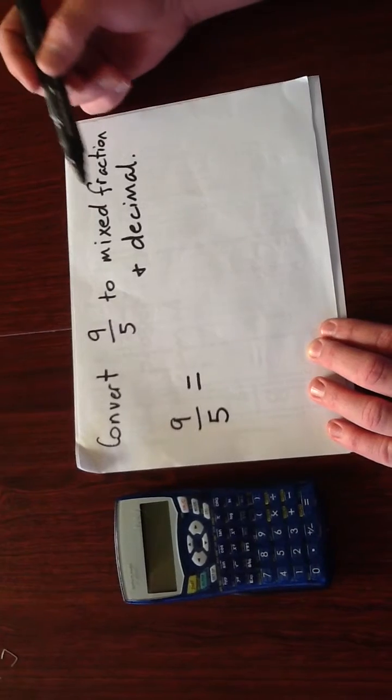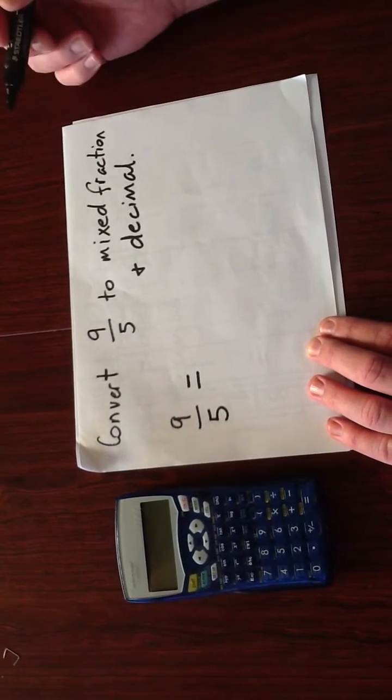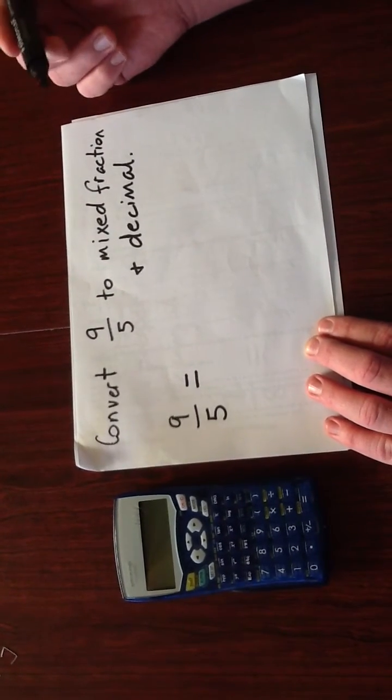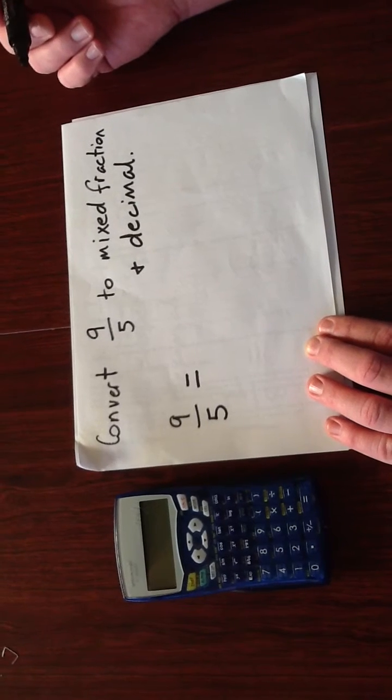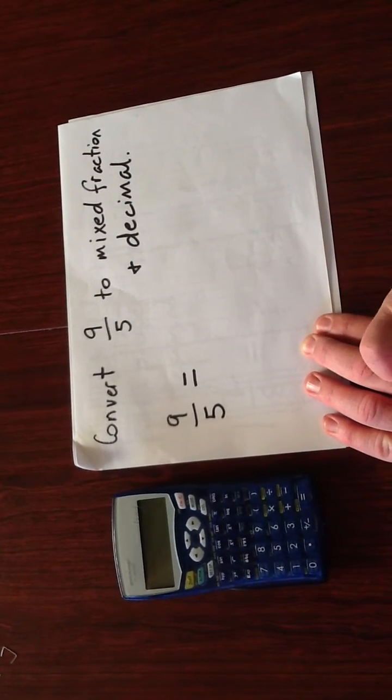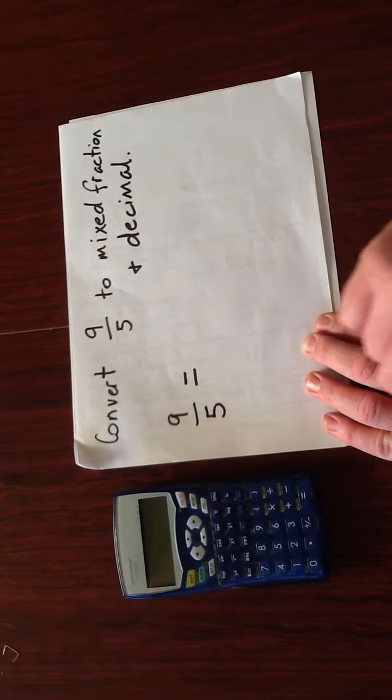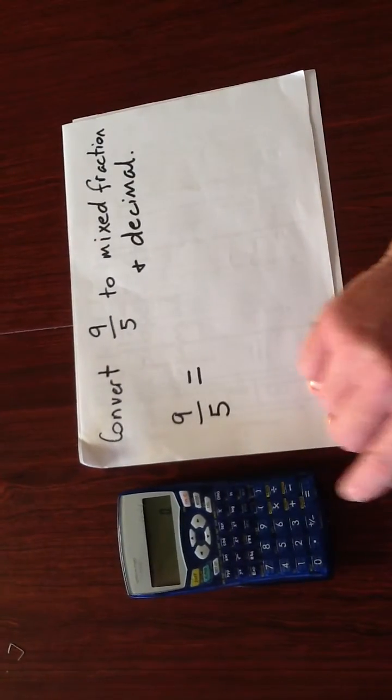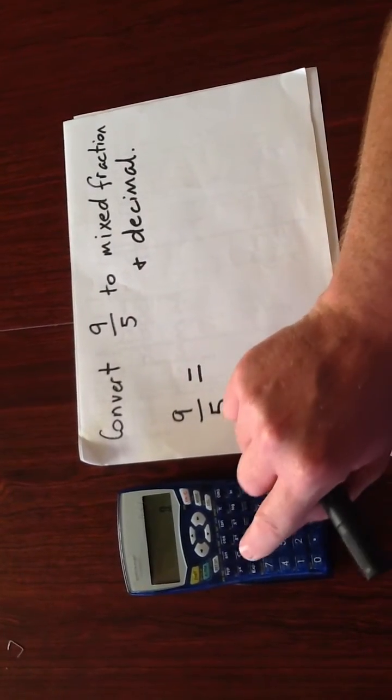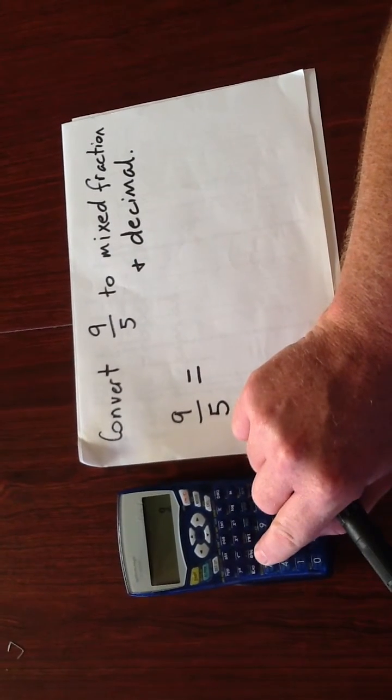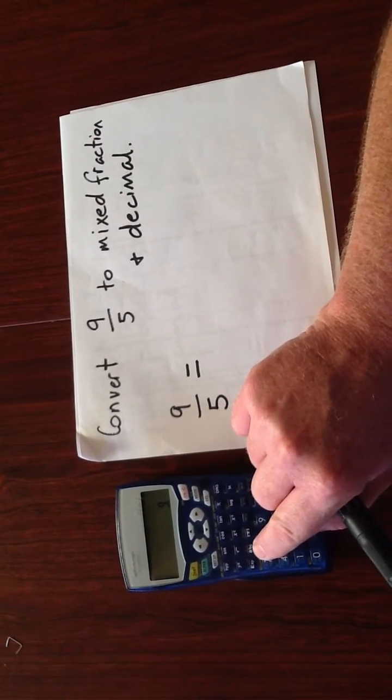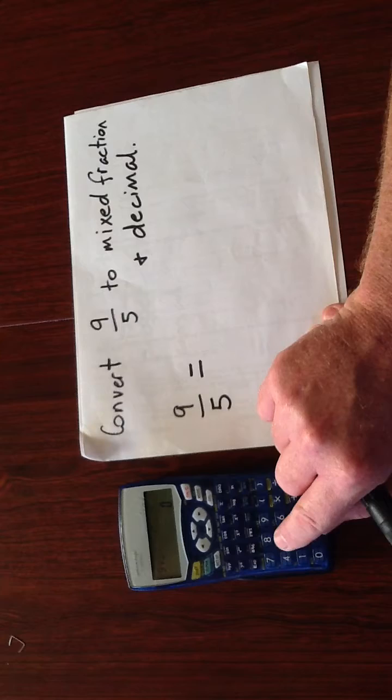The first example is we're going to convert the improper fraction of 9 over 5 to a mixed fraction and a decimal. So firstly we enter 9, turn your calculator on first, 9, press the fraction button which is the ABC button and then 5.